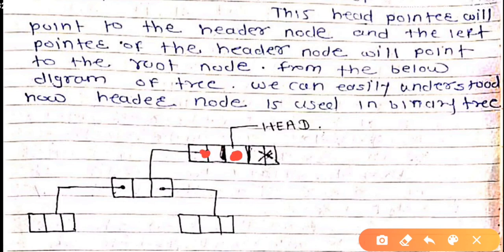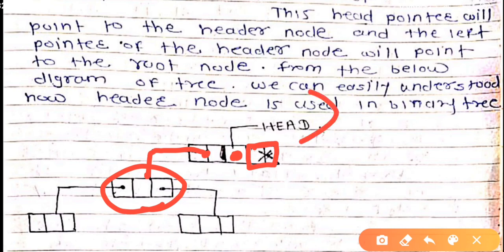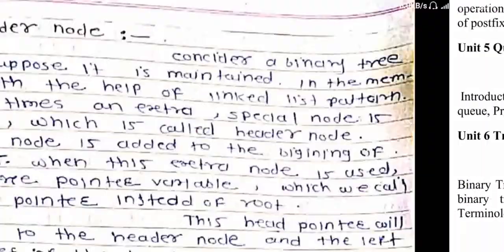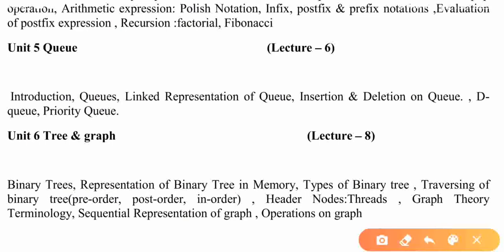In the header node, the left part has a pointer which points to the root node, and the right part has nothing - it is null. The left part of the header node points to the first part of the root node, and the tree continues from there.